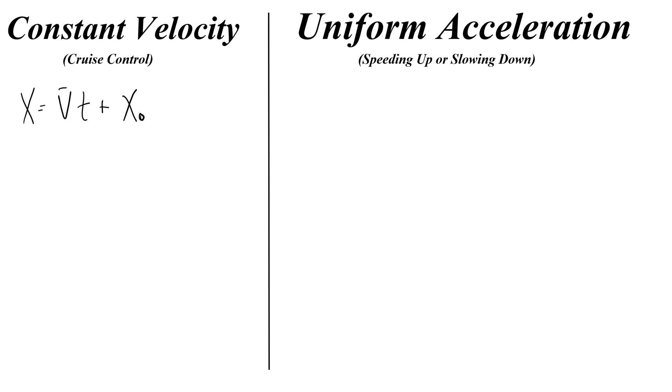But you can get away with solving any problem where an object is moving with constant velocity, like a car in cruise control, with that one equation. For objects that are speeding up or slowing down, we say that they're moving with uniform acceleration, meaning they're gaining speed the same amount every second.